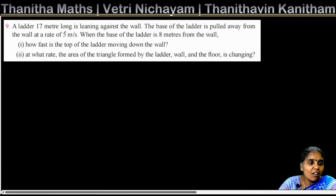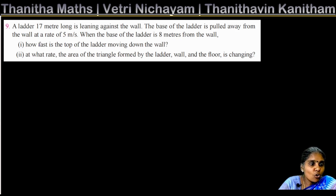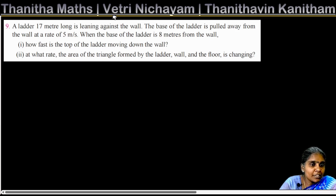A ladder 17 meters long is leaning against the wall. The base of the ladder is pulled away from the wall at a rate of 5 meters per second. When the base of the ladder is 8 meters from the wall, how fast is the top of the ladder moving down the wall? At what rate is the area of the triangle formed by the ladder, wall and the floor changing?